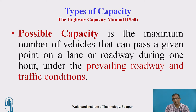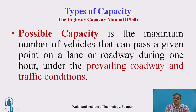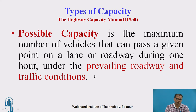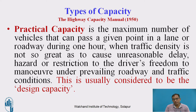The second type is possible capacity, which is slightly less than theoretical capacity. Possible capacity is the maximum number of vehicles that can pass a given point or lane during one hour under prevailing roadway and traffic conditions. It is closer to actual practice, but it is still very difficult to achieve because mixed traffic introduces disturbances from other vehicles, signals, and geometry. Both ideal and prevailing conditions are difficult to obtain.